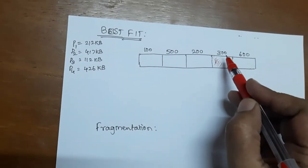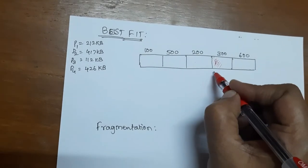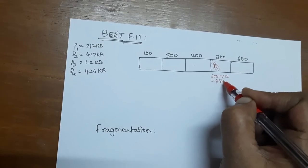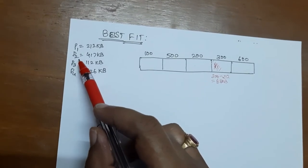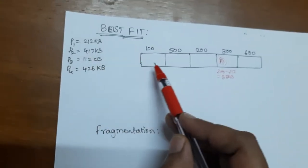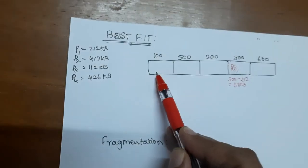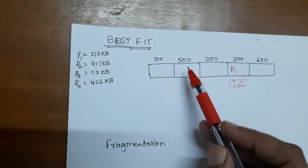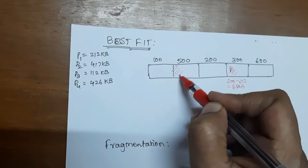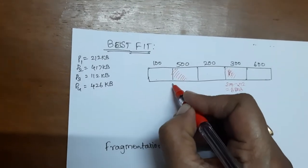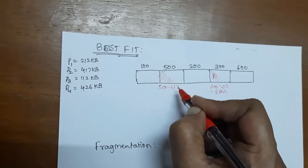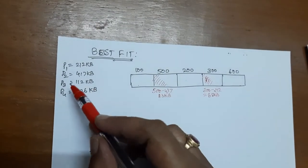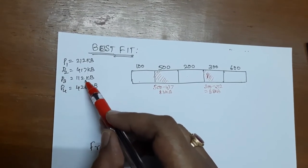So P1 is allocated with the partition of size 300 KB, with leftover memory of 300 minus 212, equal to 88 KB. The next incoming process is P2 of size 417 KB. The first partition will not accommodate P2, so it goes to the second partition of size 500 KB, which is big enough. P2 is allocated with the second partition, creating a hole of 500 minus 417, equal to 83 KB.